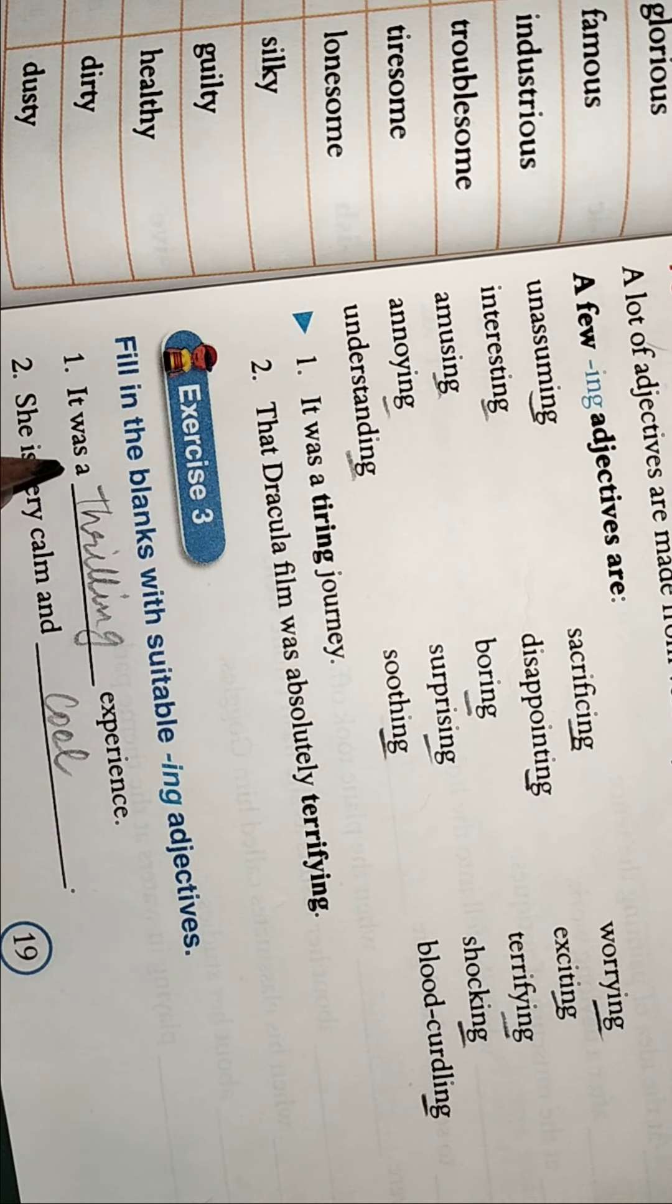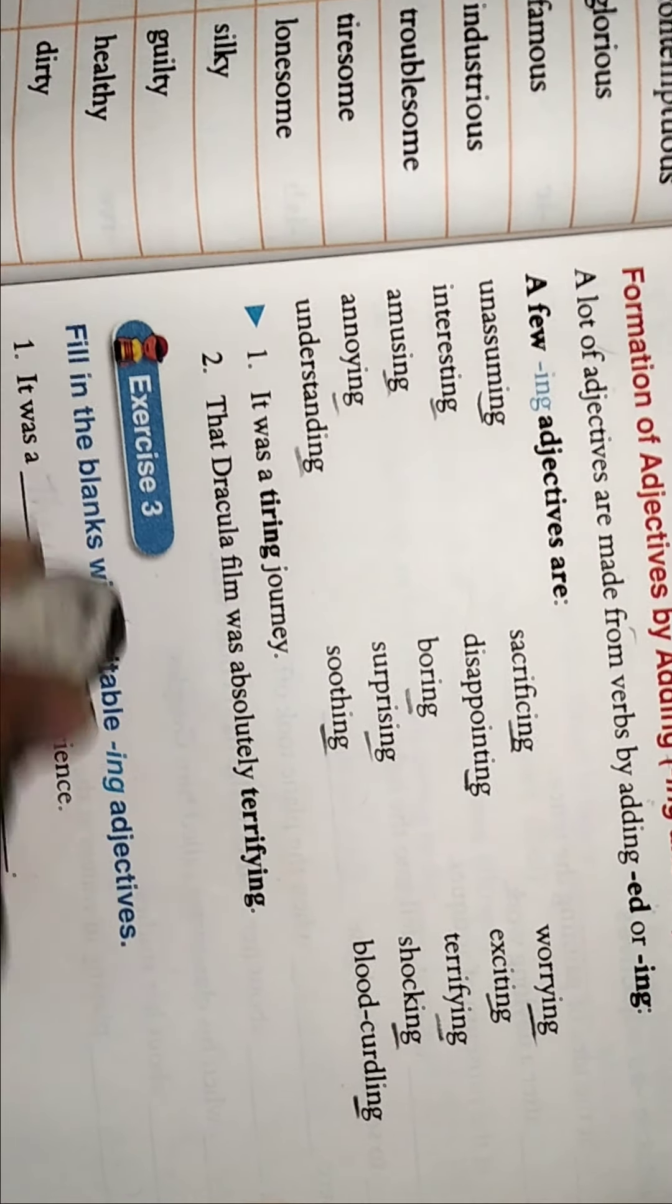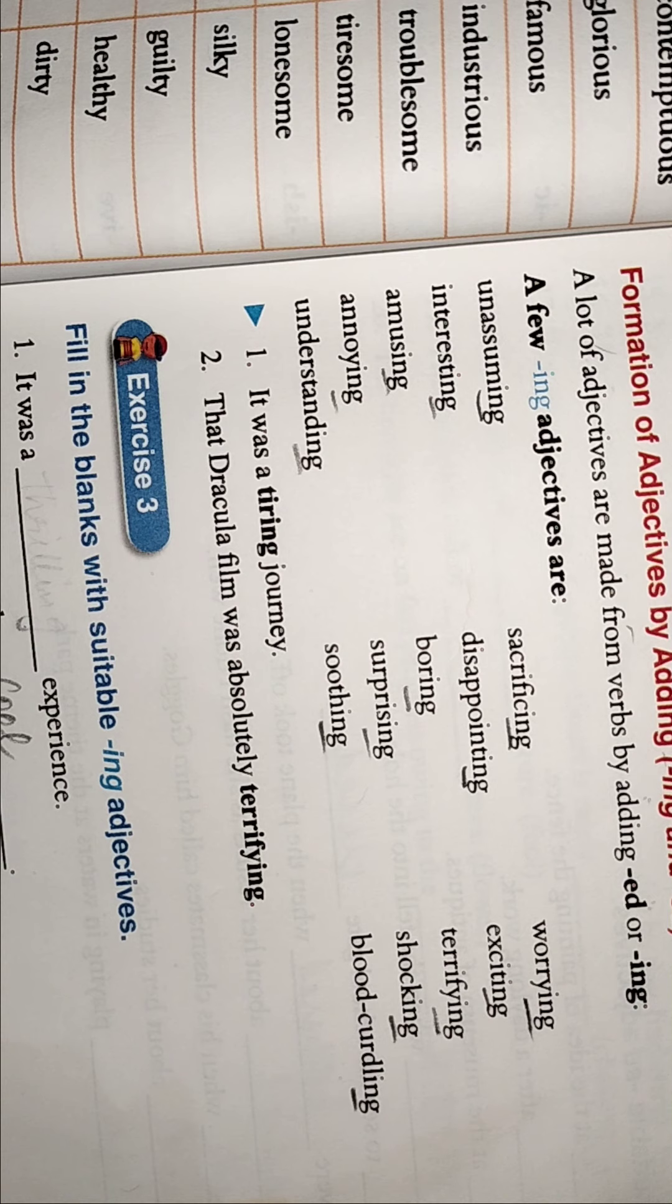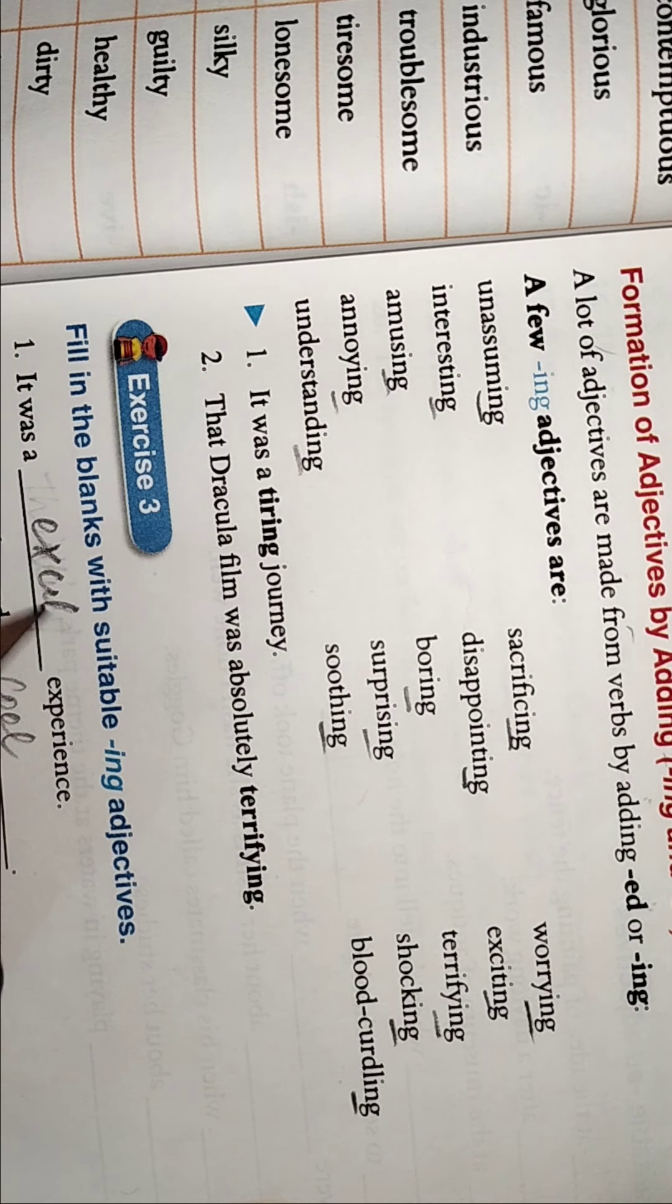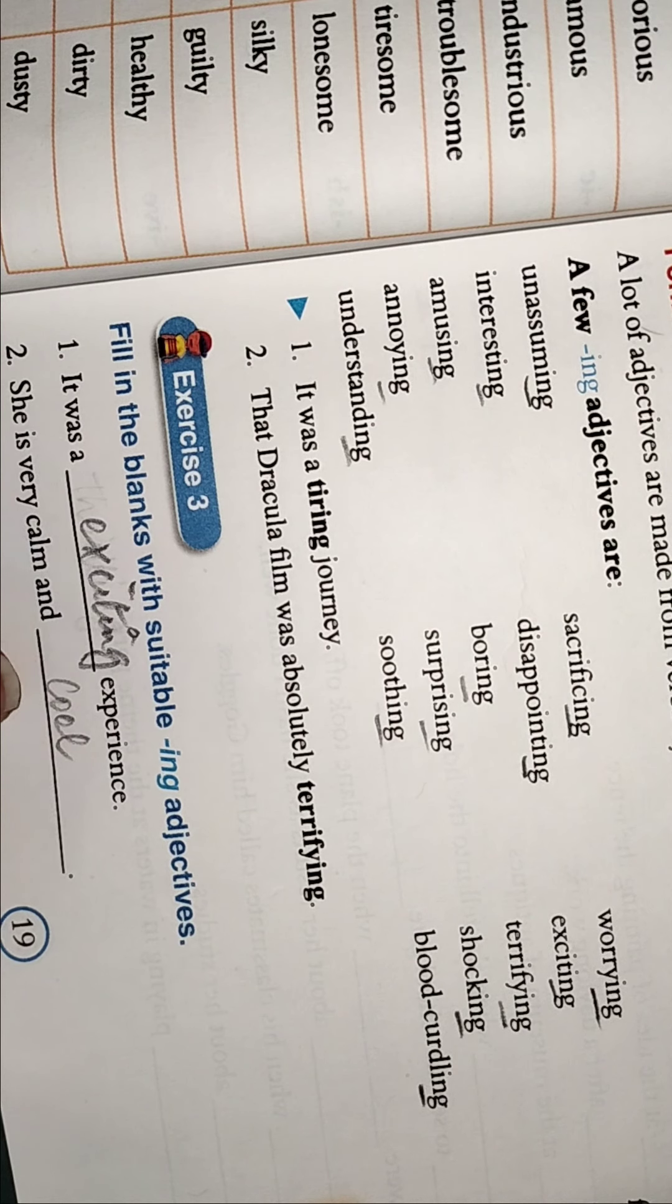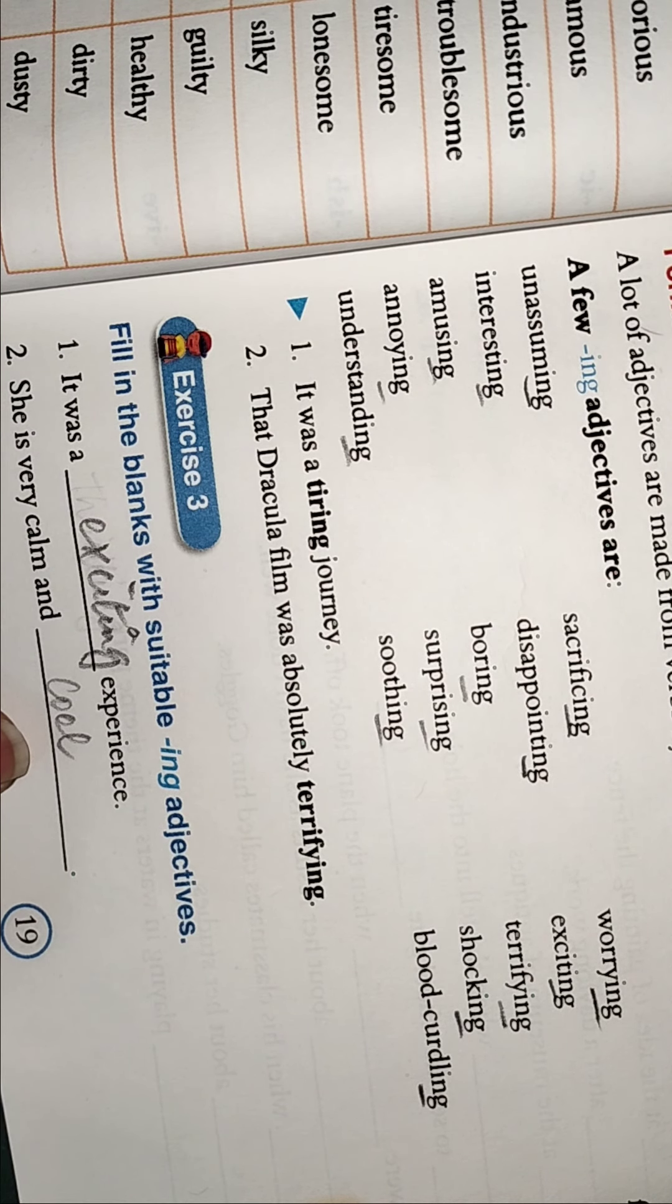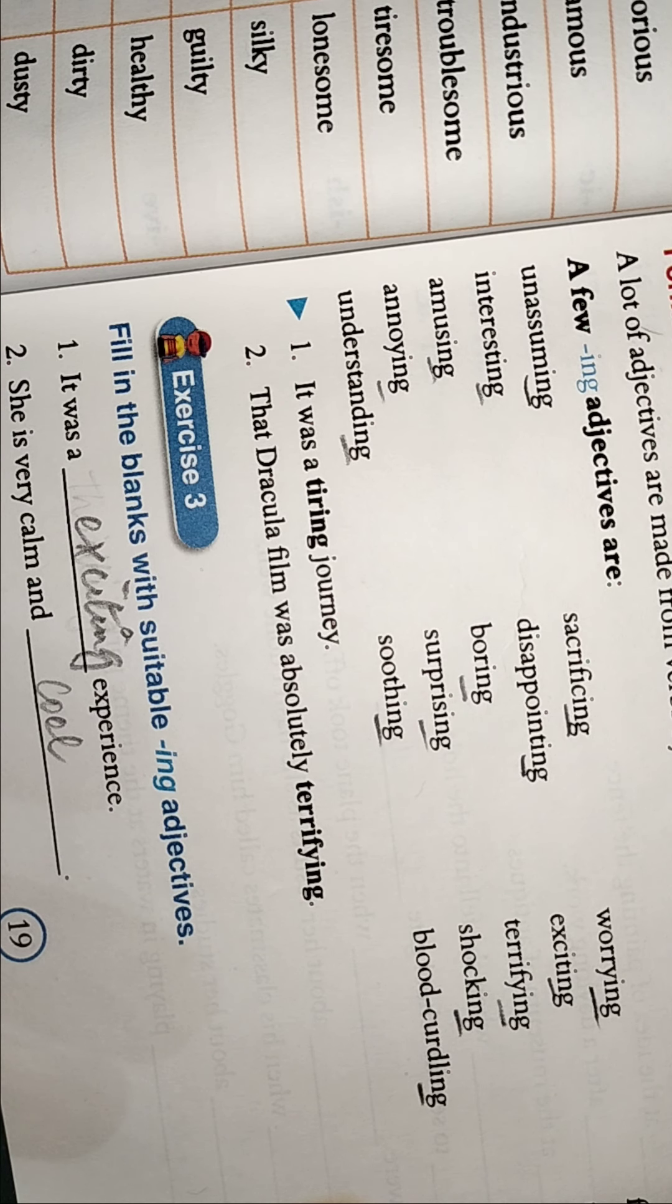Now we can come to this exercise - fill in the blanks with suitable ING. It was a thrilling experience, ya hum kuch aur bhi bhar sakte hain, not only thrilling, kuch bhi aap daal sakte hain beech mein. It was a frightening also, ya it was exciting also, amusing. Exciting daal deejiye, it was an exciting experience. You can use any word you like. She is very calm and - maine cool likhna, aap kuch likh sakte hain, very calm and cool I have written this.